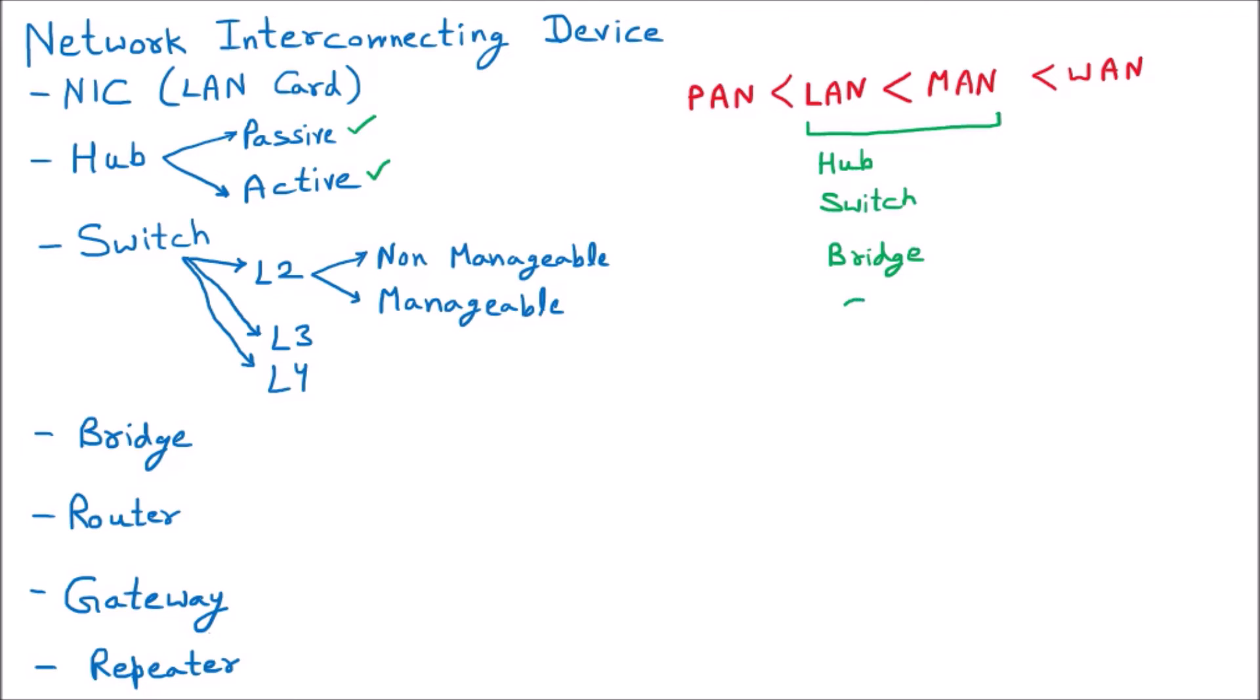Then afterward in the LAN-MAN category, we are having the Gateway. So whenever two LANs are there, or the MANs are there, in between we are going to connect and provide the security, then this Gateway comes into the picture.